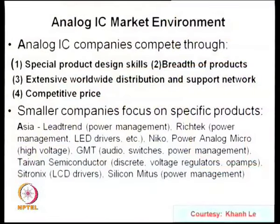Larger companies succeed through product breadth and distribution networks. Smaller companies choose one or two products and create a niche market — for example, Asia-led companies work only on power management, LED drivers, or high-voltage devices. Texas Instruments has 30,000 products, Linear has 7,500, National Semiconductor has 12,000, and Maxim has 6,500 products.